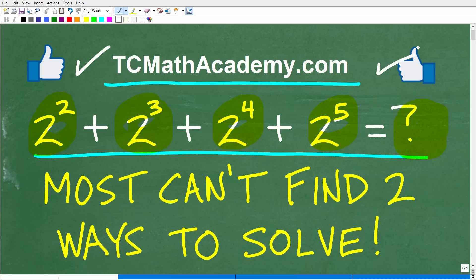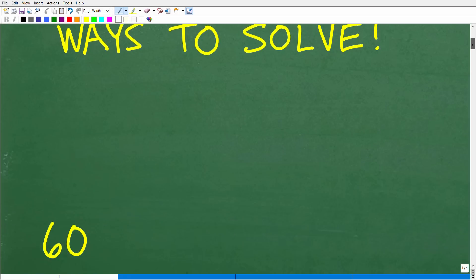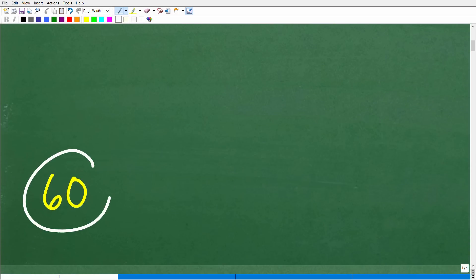Okay, so let's just go ahead and take a look at the right answer right now. Again, I'll show you two approaches, and there's probably one approach that most of you took, which is the easiest approach. Then I'm going to show you another completely different way to look at this problem, but the correct answer is 60.